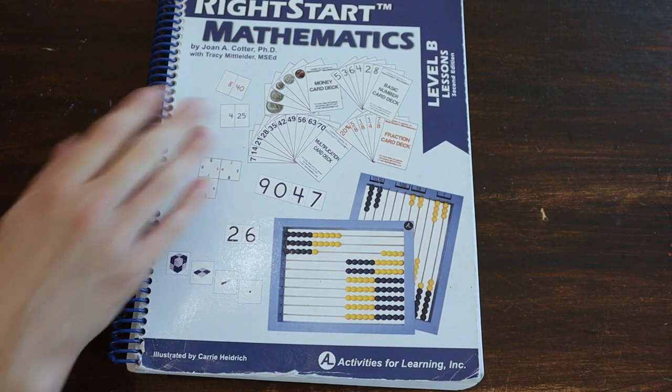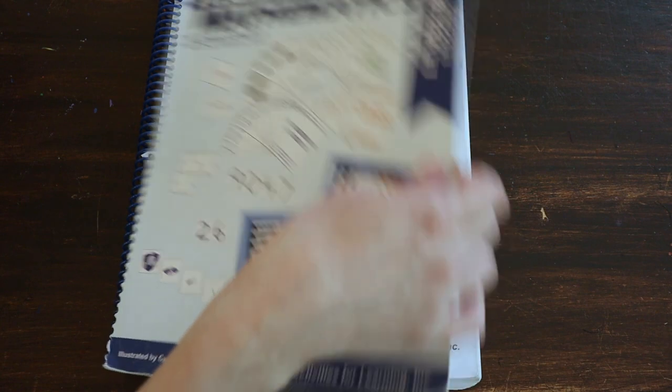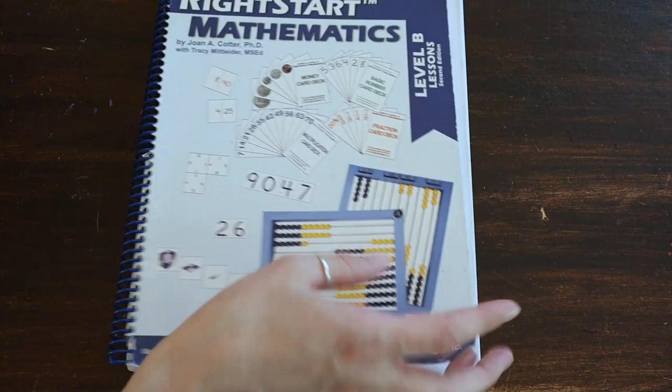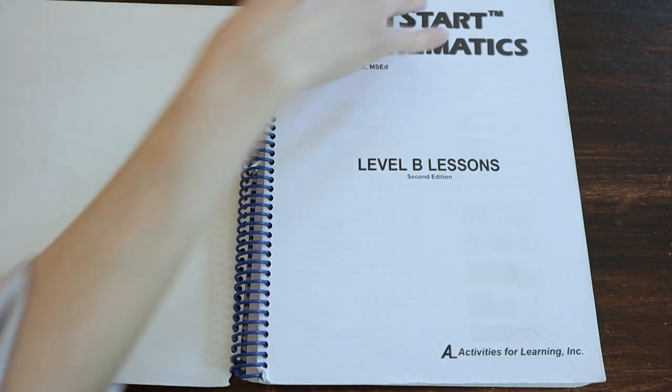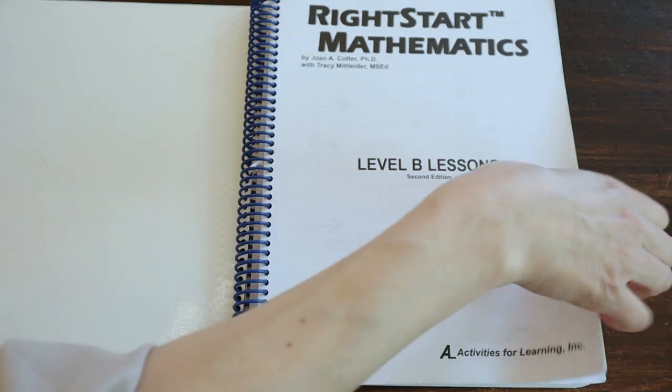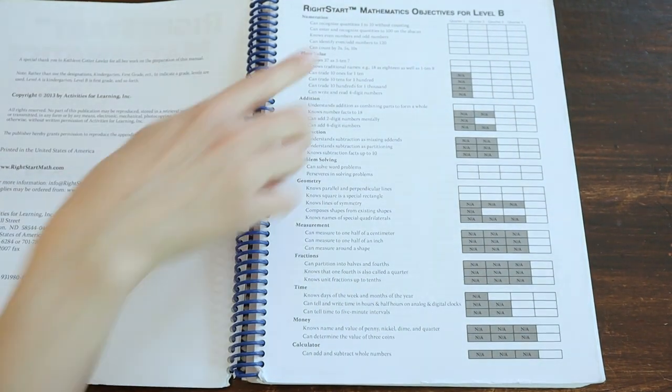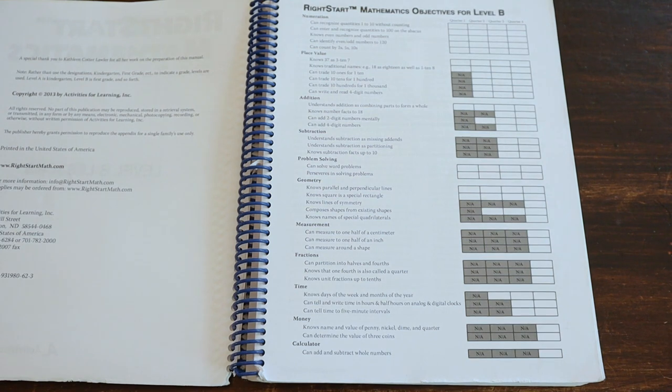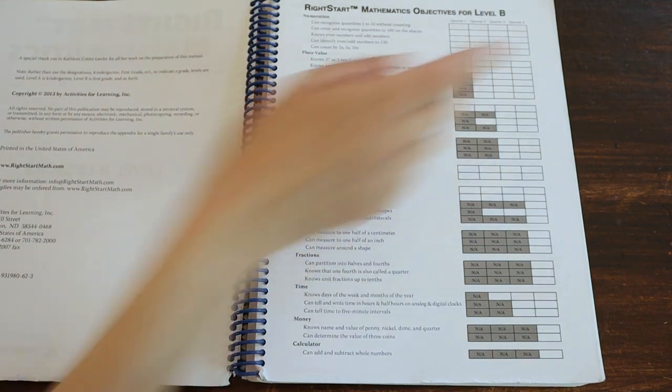So here is Right Start Mathematics Level B and we're going to flip through it. Mine is like falling apart. Not quite sure what I'm going to do when my cover is totally destroyed. So let's go ahead and do a flip through. It's laid out very similarly to Level A if you saw my video last week about that. So let's cover the objectives that will be in Level B. It's separated by quarters: Quarter 1, 2, 3, and 4.